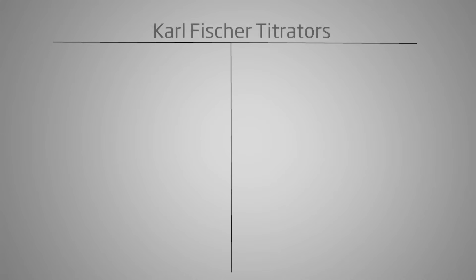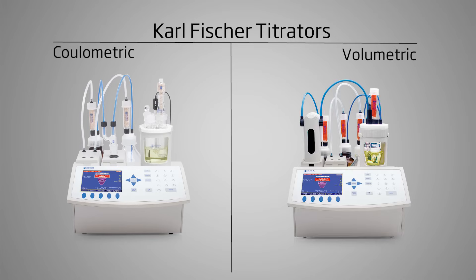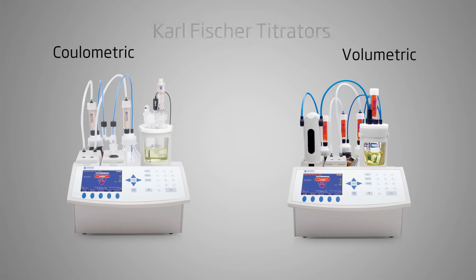Hi everyone, I'm Doug with Hanna Instruments and today we're going to talk about the difference between the two types of Karl Fischer instruments that Hanna offers. When we talk about Karl Fischer titrators, we're talking about coulometric or volumetric titrators.